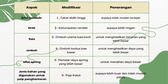Dan akhir sekali, pengubahsuaian yang dapat dibuat adalah berdasarkan aspek jenis bahan yang digunakan untuk paip penghantaran. Jenis bahan yang digunakan untuk paip penghantaran adalah paip keluli supaya lebih kuat dan tidak mudah patah.